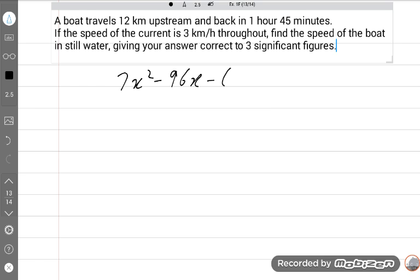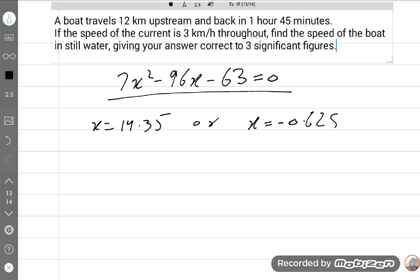This is the perfect quadratic equation. I will use a calculator and get two values. X is equal to 14.35 or x is equal to minus 0.628, which is impossible. Boat speed in still water x is equal to 14.35. This is the required answer.